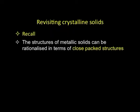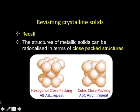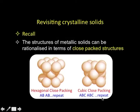Secondly, since we are going to talk about the structures of ionic solids, we will recall something about crystalline solids which we learnt in our session on solid state. In terms of crystalline solids, the structure of metallic solids can be rationalized in terms of close packed structures. We learnt about two types of close packed structures: one is called hexagonal close packed structure and second is the cubic close packed structure. In hexagonal close packed structures, layers of close packed spheres alternate in an A-B-A-B repeat, whereas if the layers repeat as A-B-C-A-B-C we get a cubic close packed structure. We will not get into details of these things because we learnt them in the other series; we just briefly recall them because we are going to use this here.